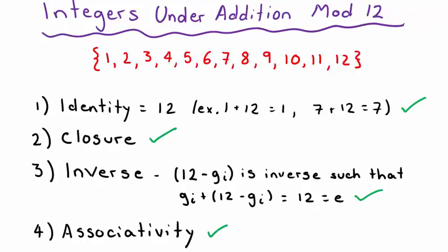Since multiplication is associative, all four requirements hold for the rational numbers with multiplication, so it is a group. For number 4, the integers under addition mod 12 is also a group. Imagine numbers on a clock: adding 12 hours always returns you to the same position, so the identity is 12. Closure holds because moving in a circle keeps results within the set. The inverse of any number n is 12 minus n, which also exists in the set. Addition is associative, so this is a group.